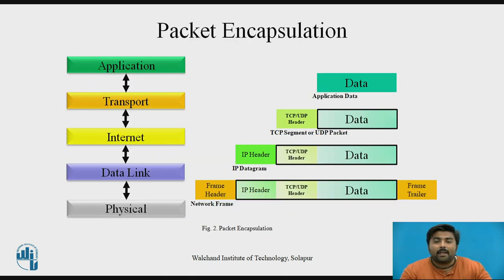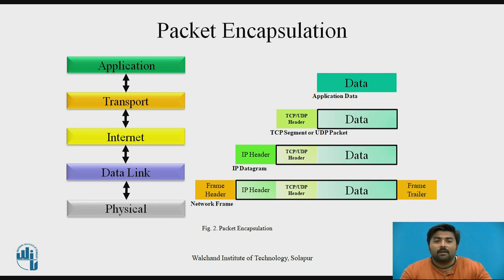Now let's see how packet encapsulation is done in the TCP/IP protocol. The packet's history begins when a user on host one sends a message or issues a command that must access a remote host. The application protocol associated with the command or message formats the packet so that it can be handled by the appropriate transport layer protocol. TCP or UDP: TCP divides the data received from the application layer into segments and attaches a header to each segment. UDP attaches a header to each packet.